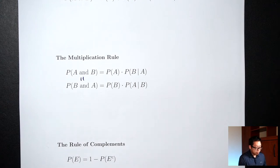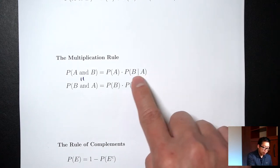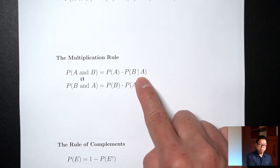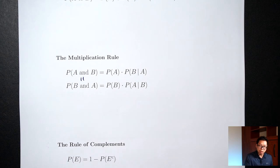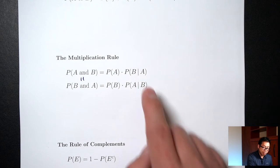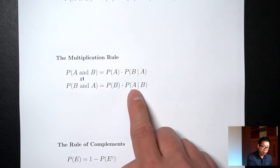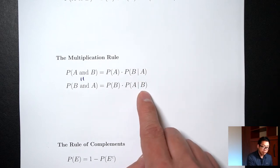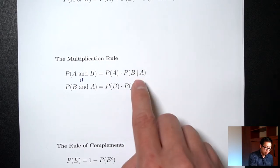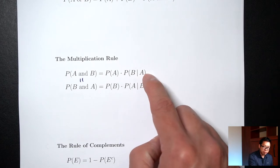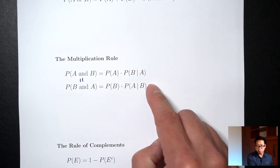On the right side we have conditional probability. For conditional probability — the one with the line or the word 'given' — the order does matter. P of B given A is different from P of A given B. So depending on the problem, sometimes you need the first multiplication rule and sometimes you need the second one.